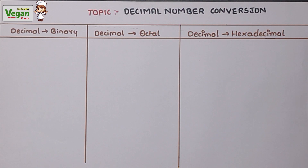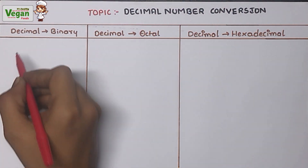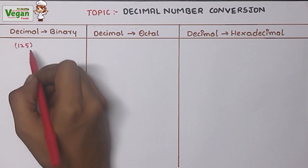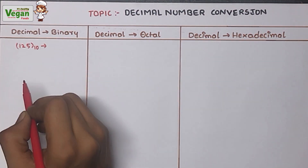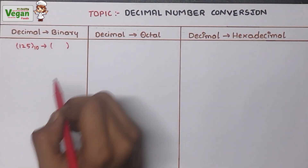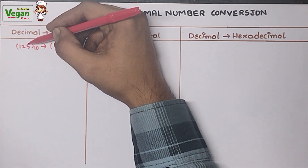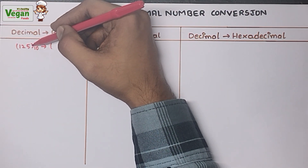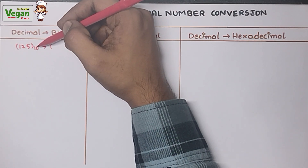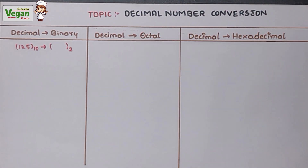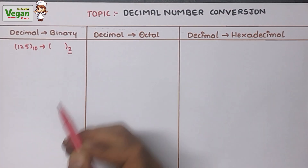Let's take the decimal value 125. The base of the decimal number is 10. Now we must convert it to binary, where the base is 2. They may give a value without a floating number — meaning no digits after the decimal point. After this, we'll also discuss how to solve floating number values.